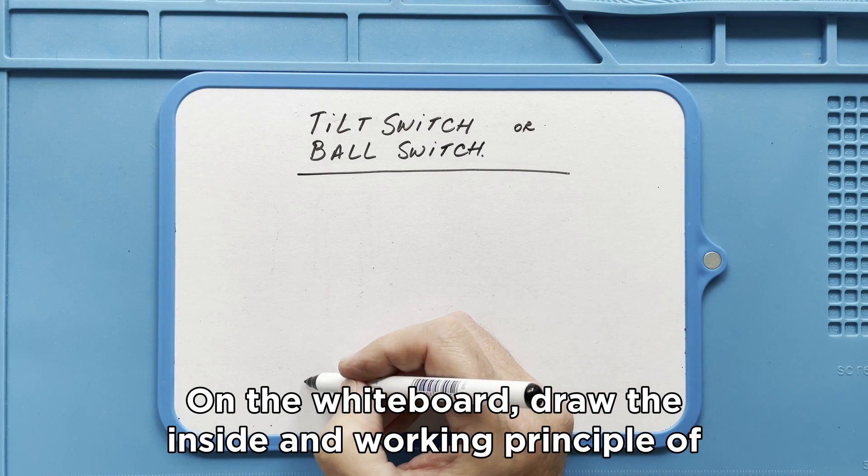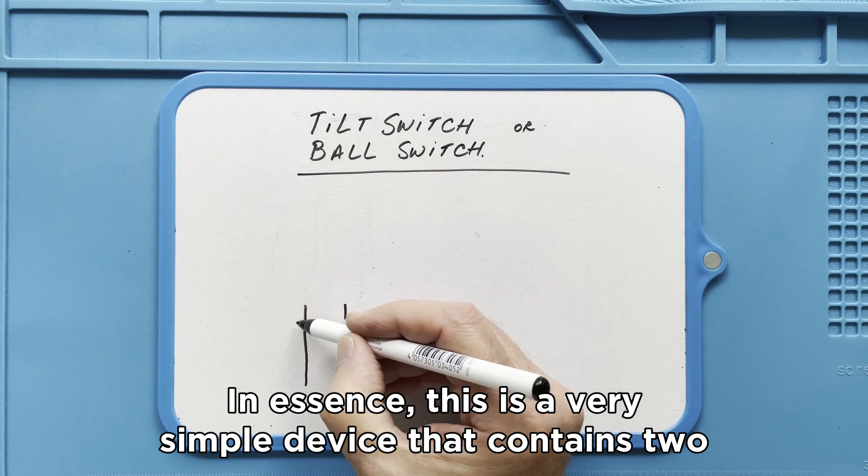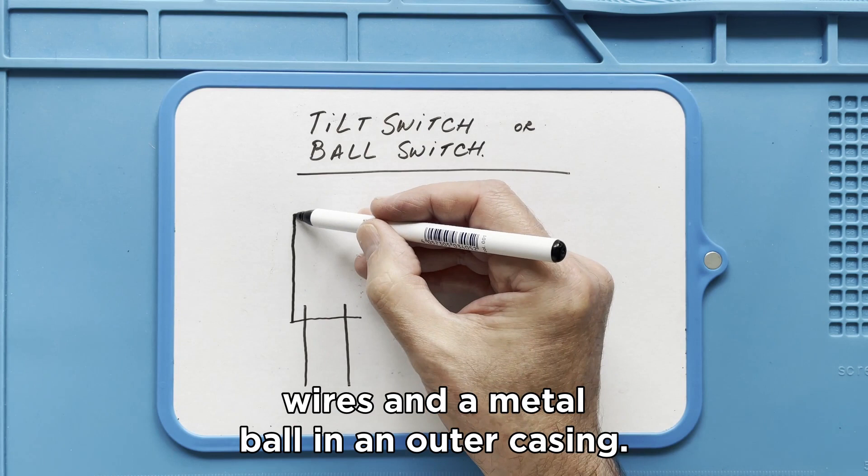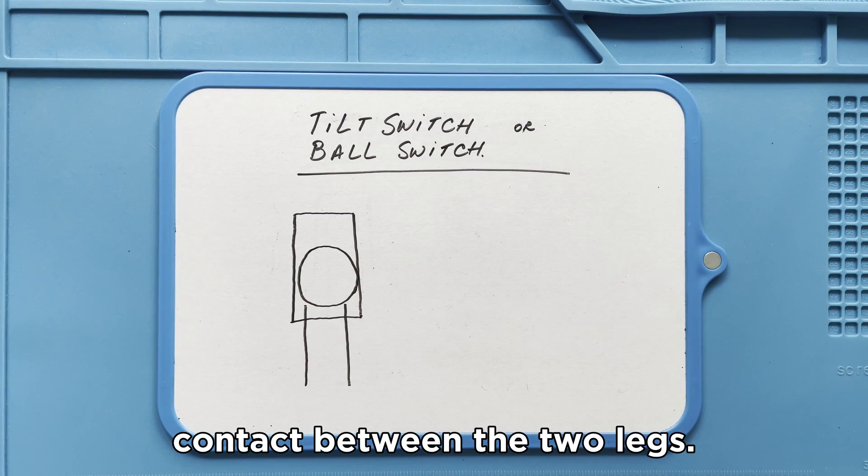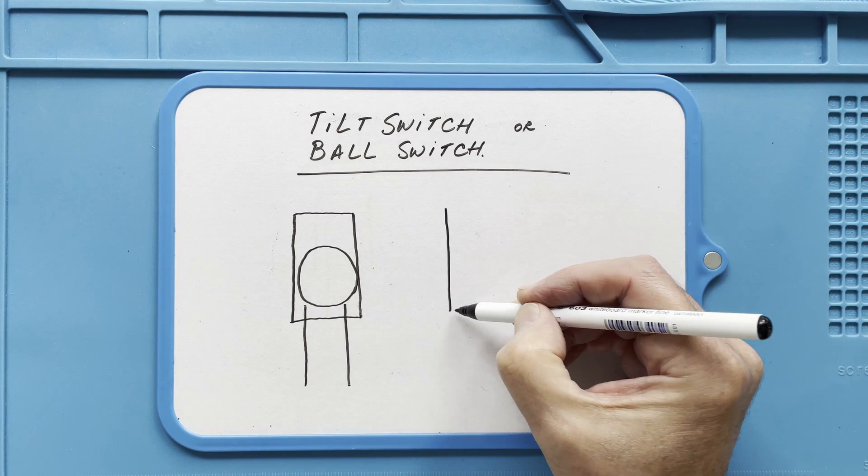In essence, this is a very simple device that contains two wires and a metal ball in an outer casing. When standing vertically on its legs, the metal ball makes contact between the two legs. This way the ball creates a closed circuit. When we move the switch to a tilted or upside down position, the metal ball rolls away from the two legs and opens the circuit.